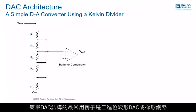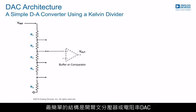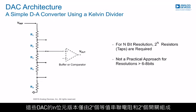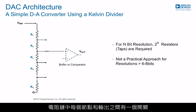The DACs most commonly used as examples of simple DAC structures are binary weighted DACs or ladder networks. The simplest structure of all is the Kelvin divider or string DAC. An N-bit version simply consists of 2 to the power of N equal resistors in series and 2 to the power of N switches, one between each node of the chain and the output, which makes it a non-practical architecture for high-resolution converters.